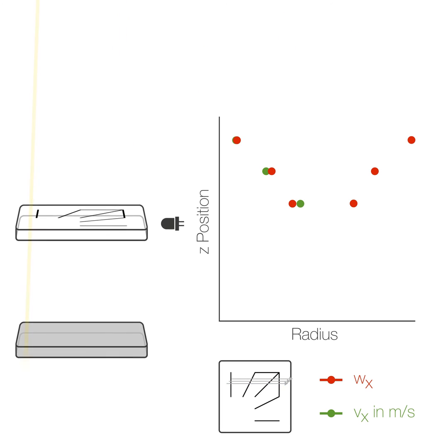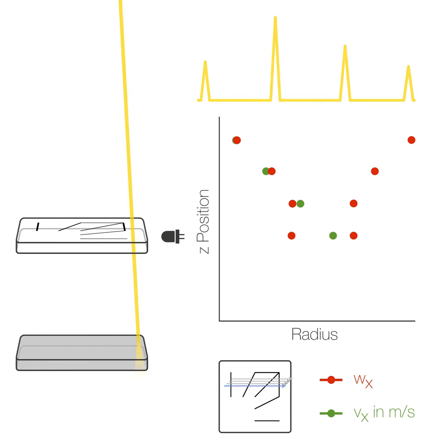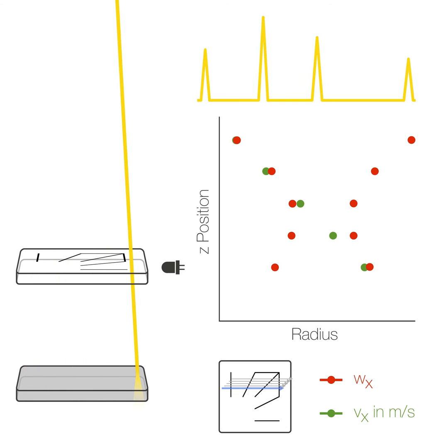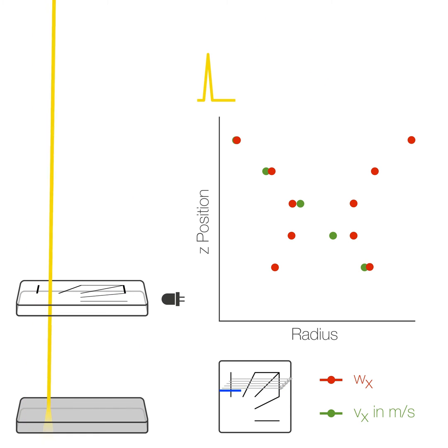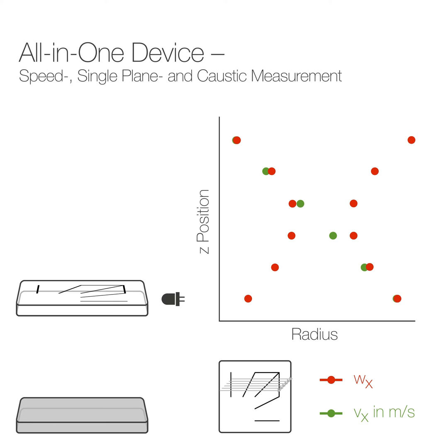But now, there are also some additional scanner-specific parameters available. The position-dependent scanning speed, shown with the green dots, enables every user to check the interaction of laser and scanner at specific process parameters.